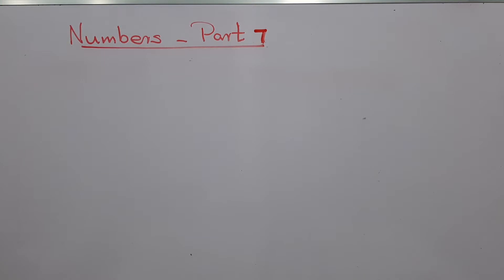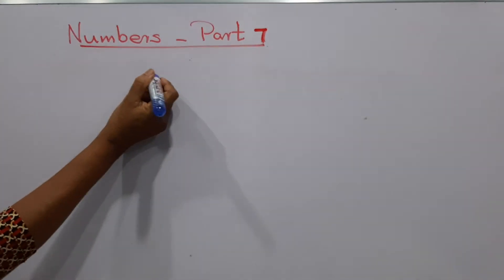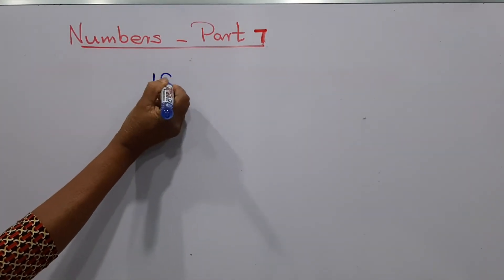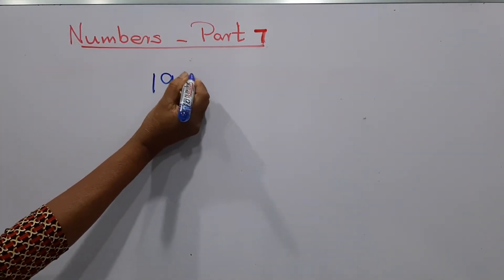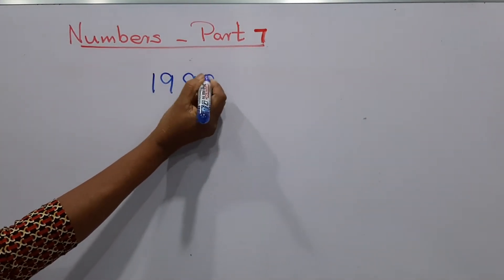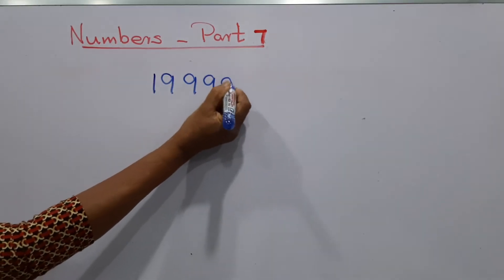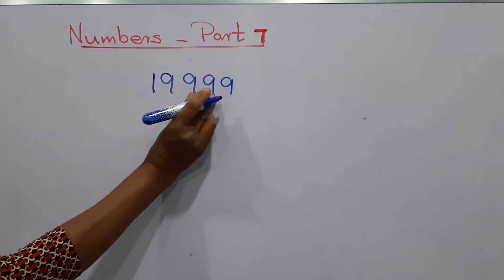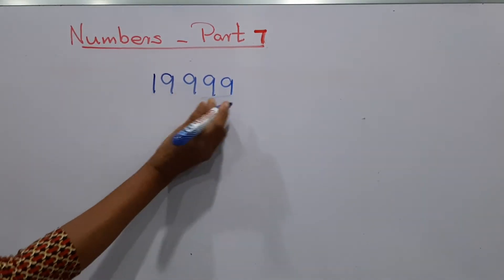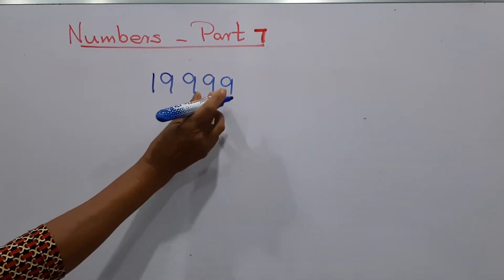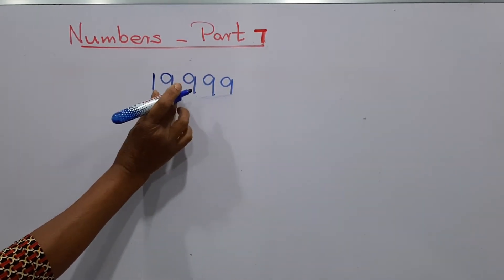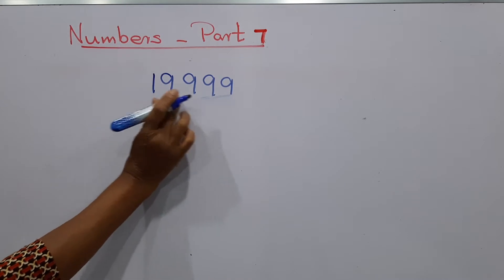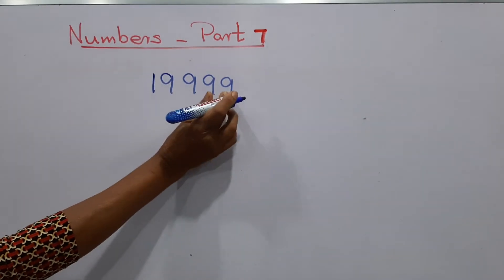We'll start today's lesson. My first number is 19,999. 1, 2, 3, 4, 5 — five-digit numbers.